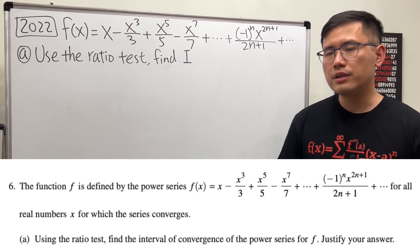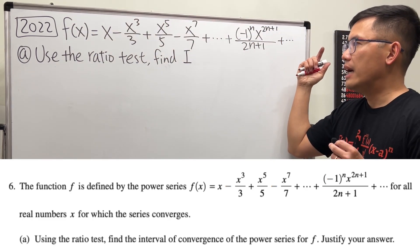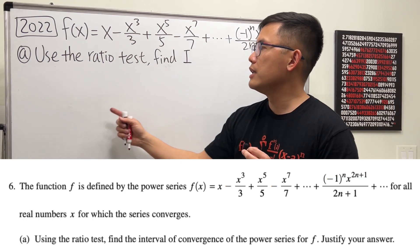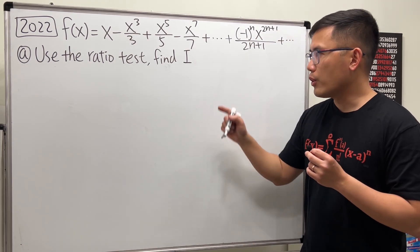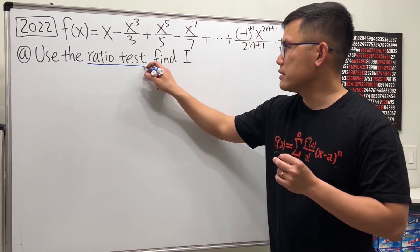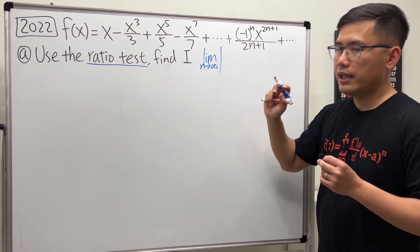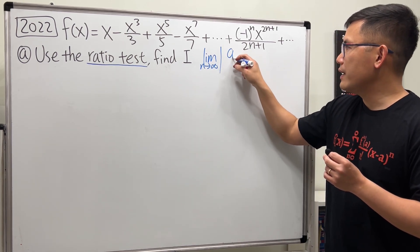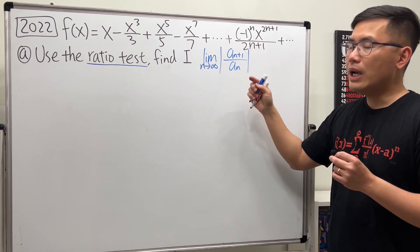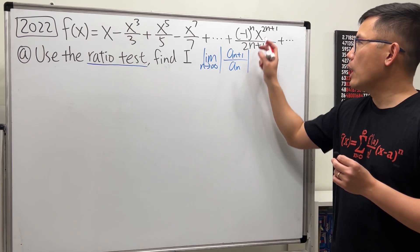This is the 2022 problem. We have our function f of x equal to this power series, and we are going to use the ratio test to find the interval of convergence. The ratio test means we take the limit as n goes to infinity of the absolute value of a_{n+1} over a_n, and we need this to be less than 1 in order for the series to converge.